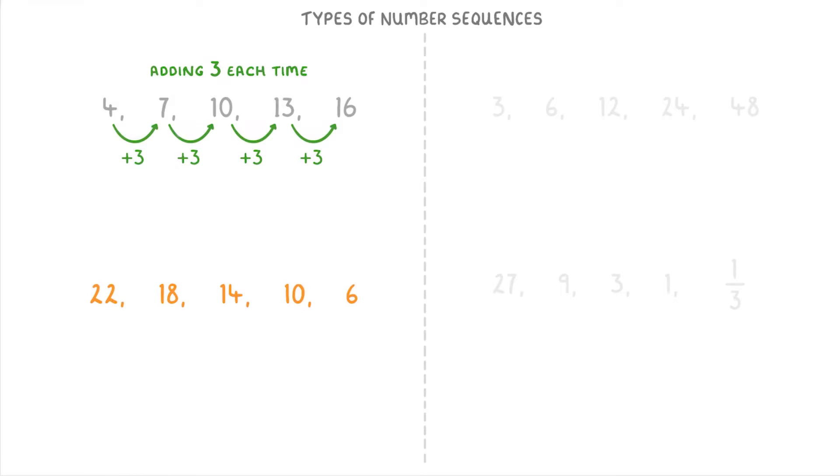For this next one, to get from 22 to 18 we subtract 4, and then to get from 18 to 14 we subtract another 4, and we have to do the same thing to get to 10 and then to get to 6. So the pattern for this sequence is that we're subtracting 4 each time.